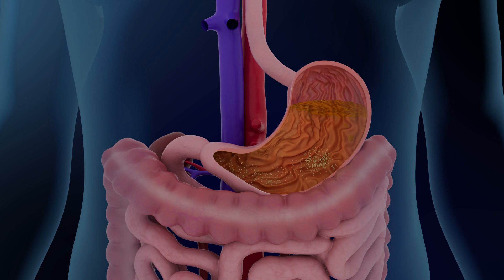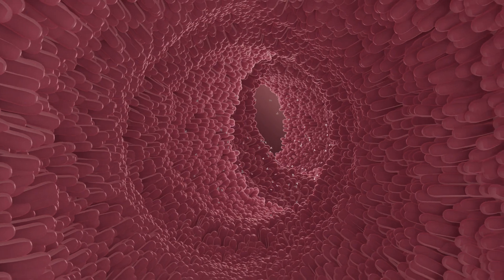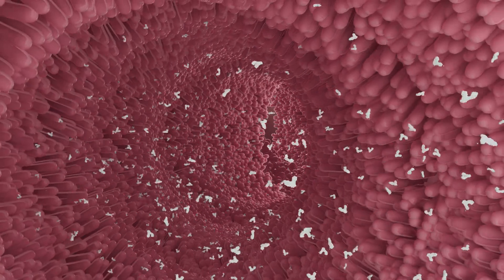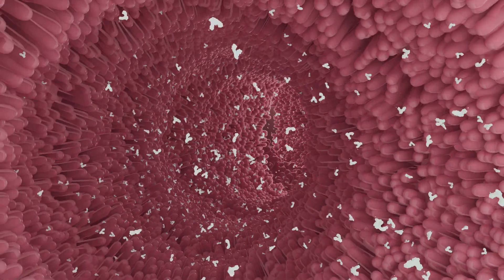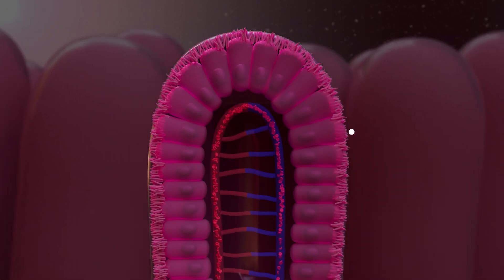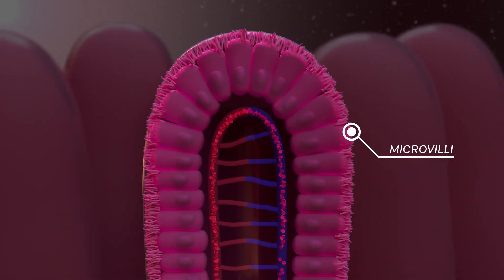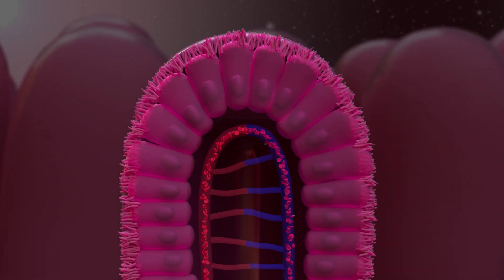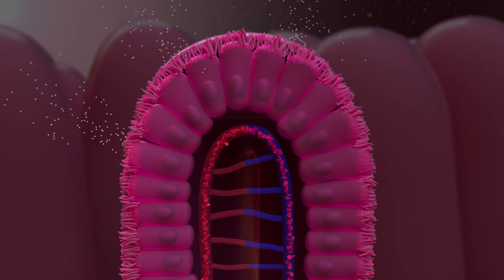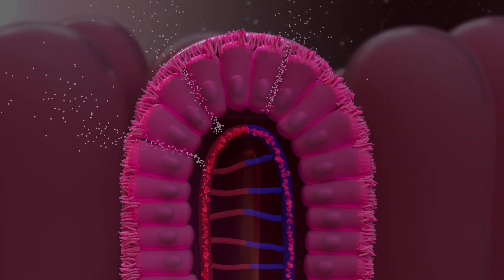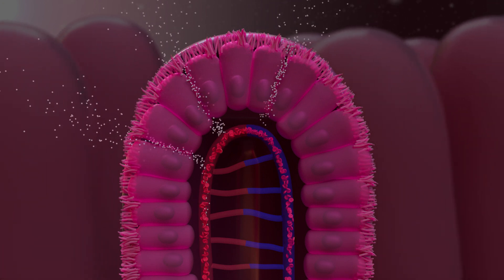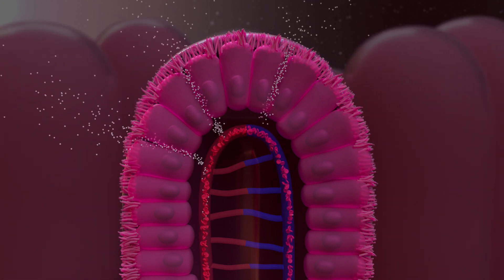The intestinal wall is comprised of numerous villi, which increase its surface area. Each of these villi consists of epithelial cells that have their own microvilli across the surface of their apical membrane. One of the ways a drug can be transported into the villi to be absorbed into the bloodstream and reach its site of action is by passing through the intercellular spaces between epithelial cells.